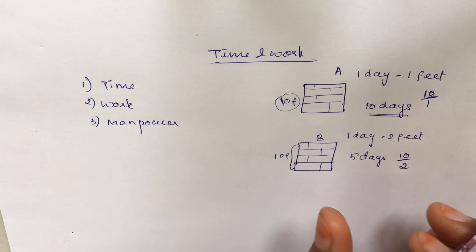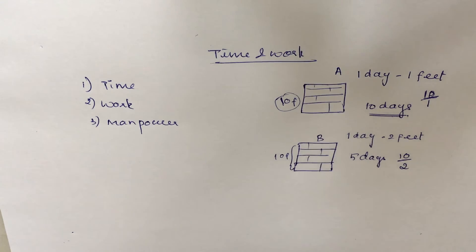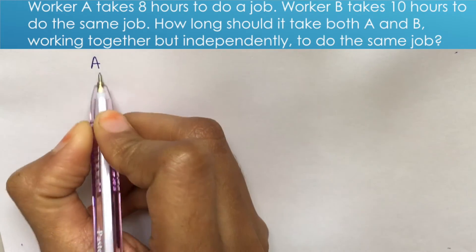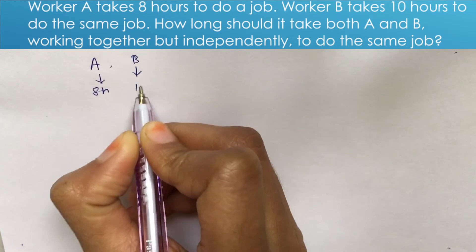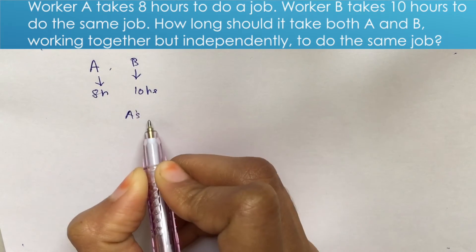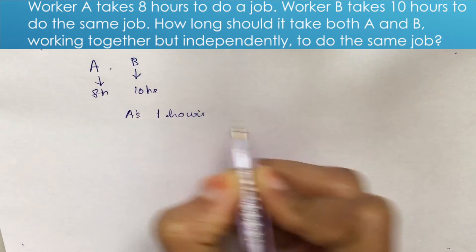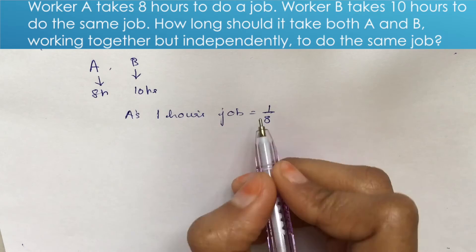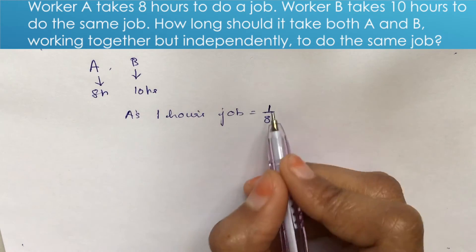There are many types of problems. Let's take examples. First problem: Worker A takes 8 hours to do a job. Worker B takes 10 hours to do the same job. How long will it take both A and B working together but independently to do the same job? A's 1-hour work is 1/8 of the job.